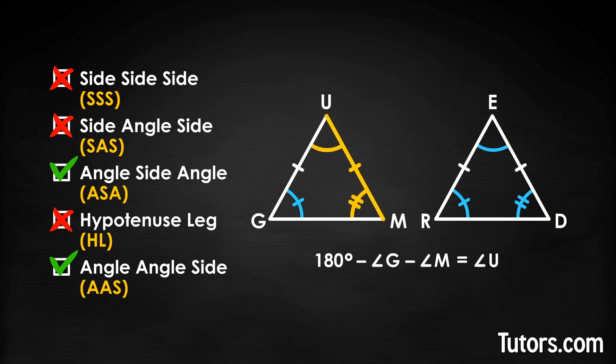If two angles and their included side of one triangle are all congruent to two corresponding angles and their included side of another triangle, the two triangles are congruent.